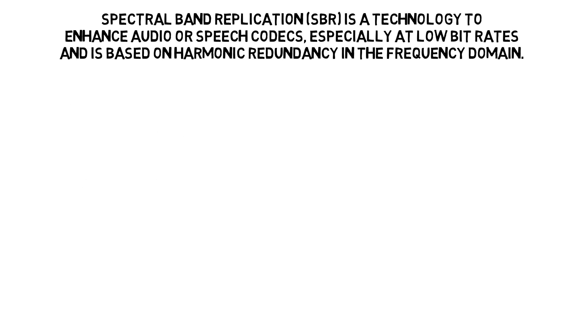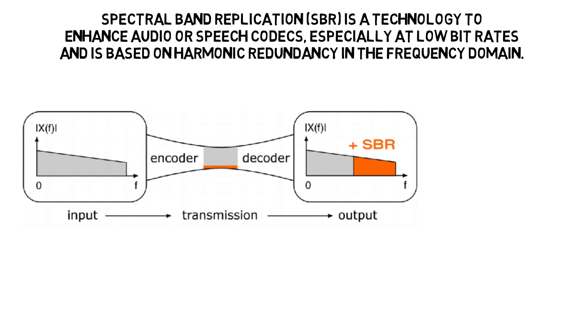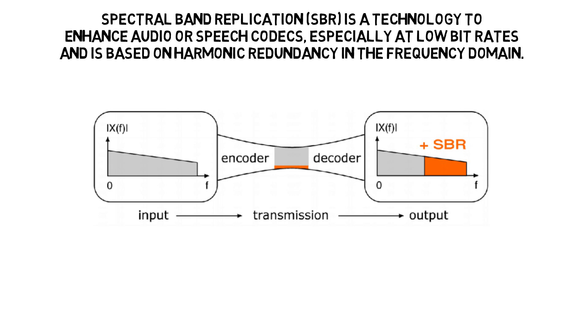What that means is we humans tend to listen to the audio spectrum on a logarithmic basis. Simplifying things a bit, we listen on an octave basis. So all those spectral lines between 10 and 20 kHz are really perhaps more resolution than we need. So we took advantage of that in HEAAC by not sending that top octave of information.